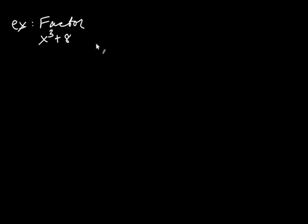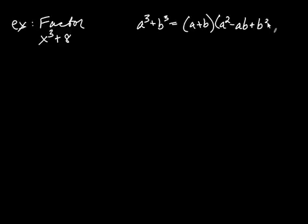Let's say we're asked to factor x cubed plus 8. So first of all, the 8 is the giveaway. Well, of course the x cubed as well, but 8 is a perfect cube. Now remember, a cubed plus b cubed is equal to a plus b times a squared minus ab plus b squared. You want to memorize that. So the question is, what are a and b?